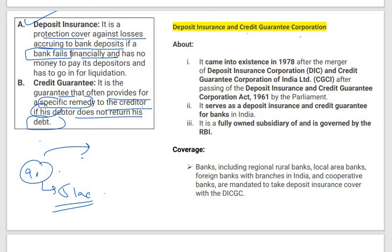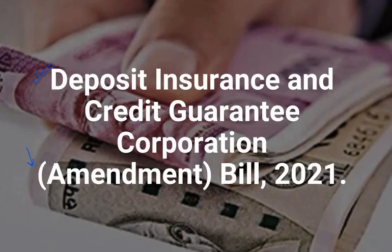The Deposit Insurance and Credit Guarantee Corporation — DICGC — came into existence in 1978, when the Deposit Insurance and Credit Guarantee Corporation Act of 1961 was passed. It serves as a deposit insurance and credit guarantee body for banks, and is an off-shoot of RBI. This was all about the Deposit Insurance and Credit Guarantee Corporation Amendment Bill 2021. I hope you understood everything about it and will not miss any question if it comes in your Prelims examination.